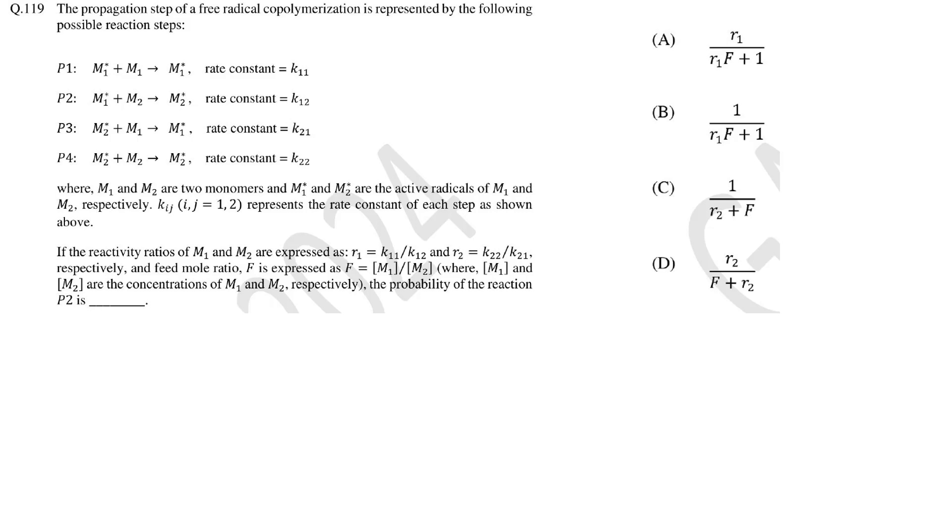This question is new for GATE and it is very interesting question. Here we need to find the expression for the probability of second reaction which is reaction of M1 radical and M2 monomer. To solve this question we have to consider the statistical model for radical polymerization. That means once M1 radical is formed it will either react with M1 monomer or M2 monomer. Similarly when M2 radical is formed it will either react with M2 monomer or M1 monomer.